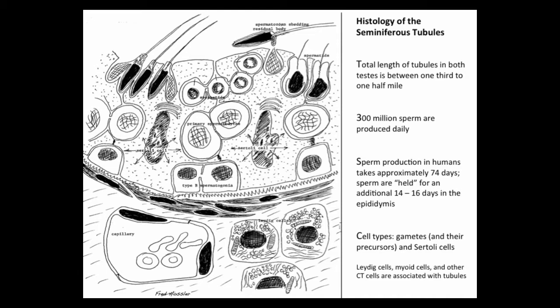Some histological images will be shown over the next few slides. The total length of the tubules in both testes is between a third to a half mile, and 300 million sperm are produced daily. Sperm production takes about 74 days and sperm are held within the epididymis for perhaps 14 to 16 days. The cell types include gametes and their precursors, Sertoli cells, Leydig cells, myoid cells, and other connective tissue type cells.